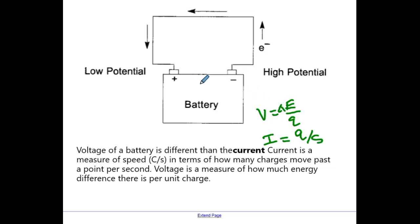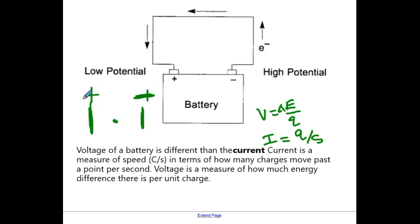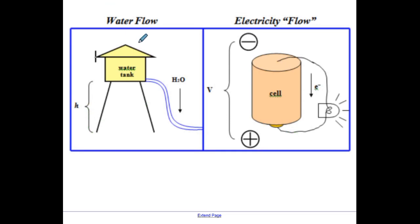In Chemistry 30 you discuss high potential and low potential, with electrons moving around a circuit. That is a little different than when we have a positive and negative plate and put a particle in between them going one way or the other. What I need you to know is the difference between voltage and current, and I've got an analogy I like to use to describe voltage versus current.